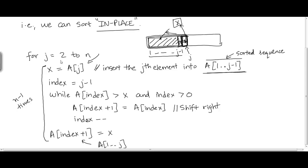If you remember, one of the things we said about a generic random access machine is that if you look at the instruction set of that machine, it is going to have all the typical operations you find in a real machine — arithmetic instructions, branch instructions, load and store instructions, procedure calls, and so on. But we also said that we are going to imagine each of those instructions as being executed in a constant amount of time — maybe a different constant for each instruction, but nevertheless constant.